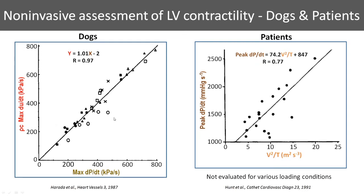This was done in dogs as an example, where U is the aortic velocity, and if you take the derivative of that you get acceleration. This was multiplied by rho, the density of blood, and pulse wave velocity C to equalize the units. The correlation was found to be excellent between the two parameters. There were also attempts in patients with other methods — here is an example where the peak aortic velocity was squared and divided by the time to peak, and this was compared to DPDT, showing good correlation. However, this was not done under various loading conditions for obvious reasons.